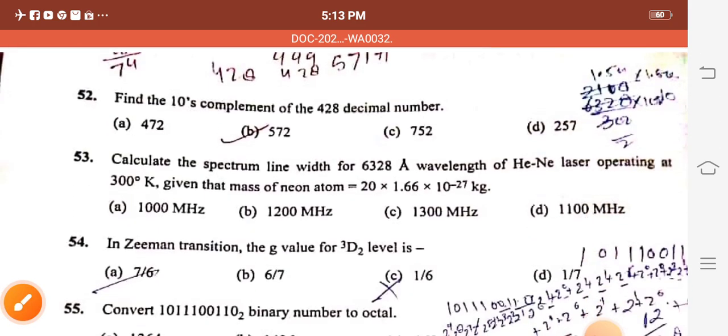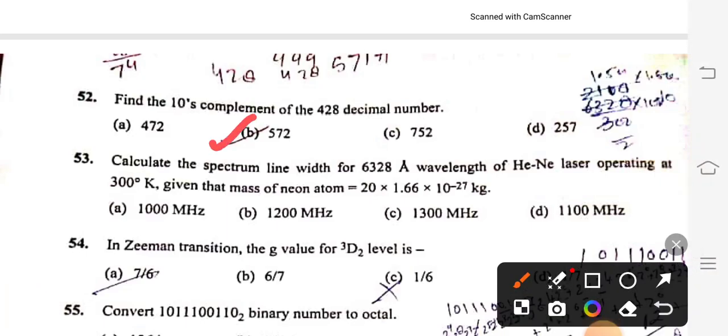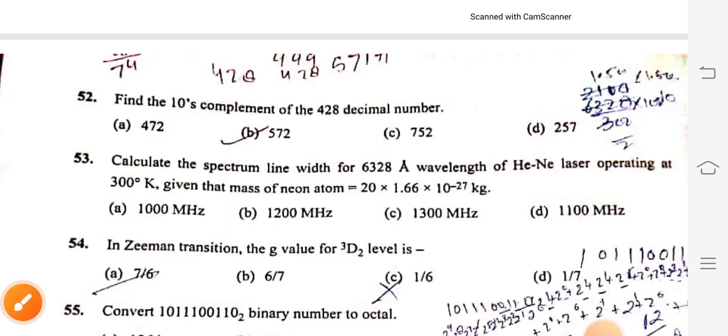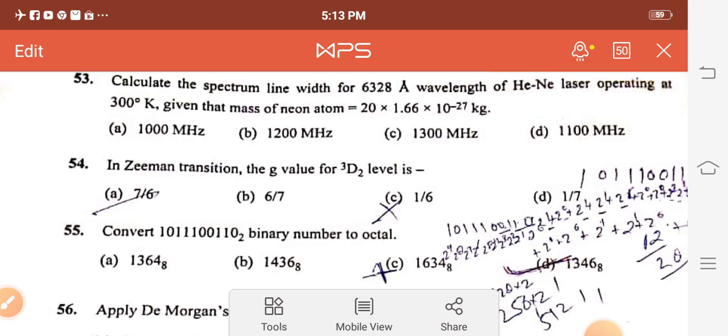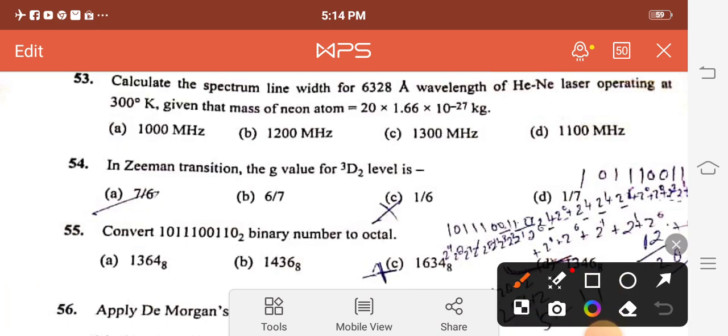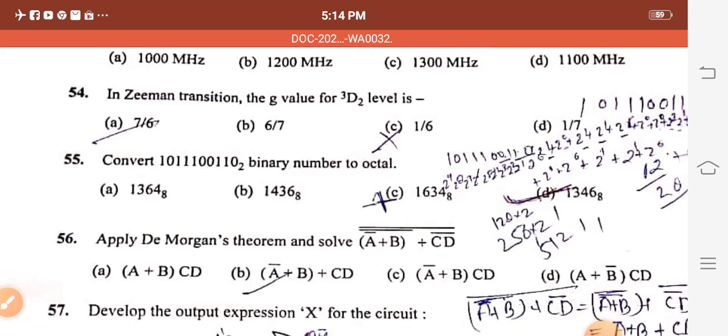Question 52: Find the tens complement of the 428 decimal number. Right option is 572, option B. There is a formula which I have put on top. Question 53: Calculate the spectrum line width for 6328 angstrom wavelength of helium-neon laser operating at 300 degree Kelvin, given that mass of neon atom is 20 into 1.6 into 10 to the power minus 27 kg. Right option is 1100 megahertz. I am not sure about the calculation, so you can comment the right answer in the comment section.